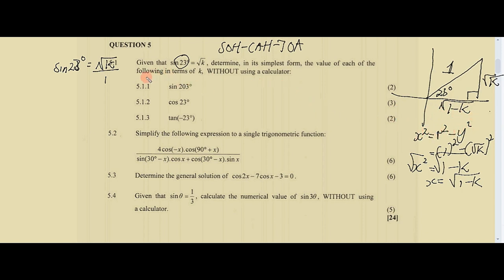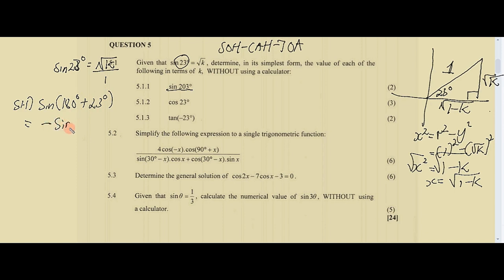Now we can solve the questions. Fill in the diagram first, then attempt to solve. For sine 203°, we express it using reduction formulae: sine(180° + 23°) = sine 203°. Since sine is negative in the third quadrant, this gives negative sine 23°. Since sine 23° = √k, we get negative √k. That's how you obtain your two marks.